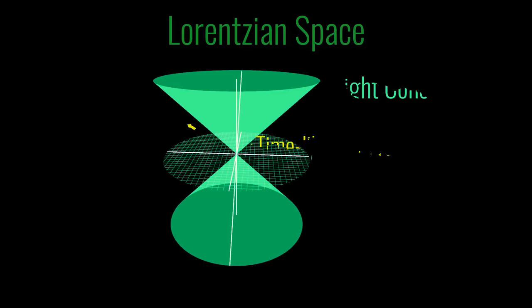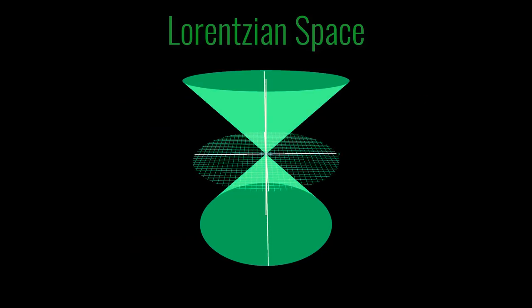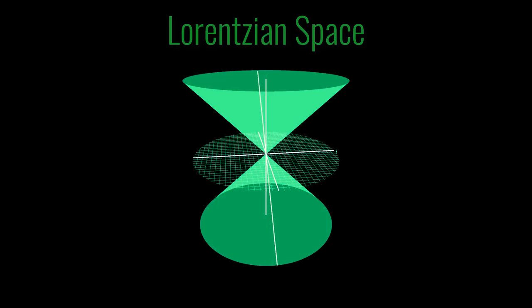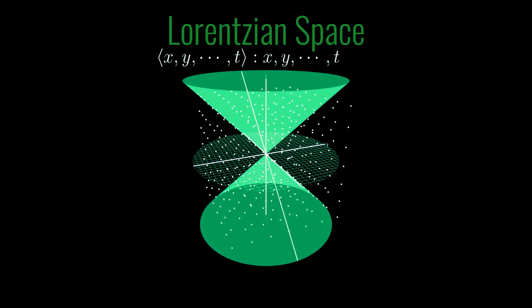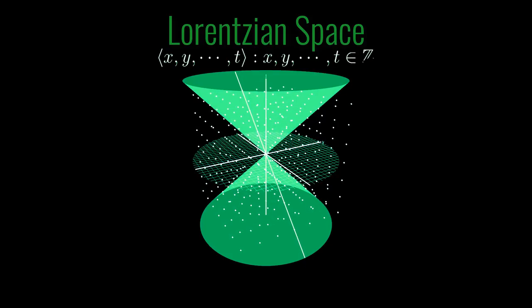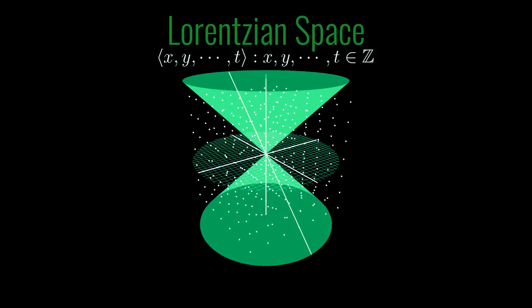In Lorentzian space you can still form lattices. For instance you can take the lattice of all points x, y, z and so on up to t with all x, y, z and t in the integers say. So that would give you a sort of analog of the square lattice.